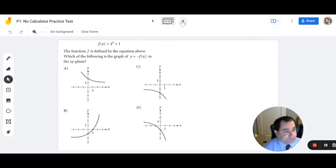Number 14. In this problem here, the function f is defined by the equation above, which of the following is the graph of y equals negative f of x in the xy plane. So what I can see here is that I could probably eliminate some choices by finding the y-intercept. So because they have a positive 2, a negative 1, a negative 2, and a negative 1, I have some varying y-intercepts. So let's do this. Negative f of x is equal to 2 to the x plus 1. And what do we have to substitute in to find the y-intercept? Zero.